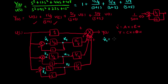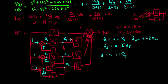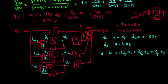From the block diagram, ẋ₁ = u − x₁, since U(s) enters the summation and the feedback is −x₁. Similarly, ẋ₂ = u − 3x₂, and ẋ₃ = u − 5x₃. The output expression is y = u + (15/8)·x₁ + (3/4)·x₂ + (3/8)·x₃. We now have all four equations needed to write the system in standard state-space form.